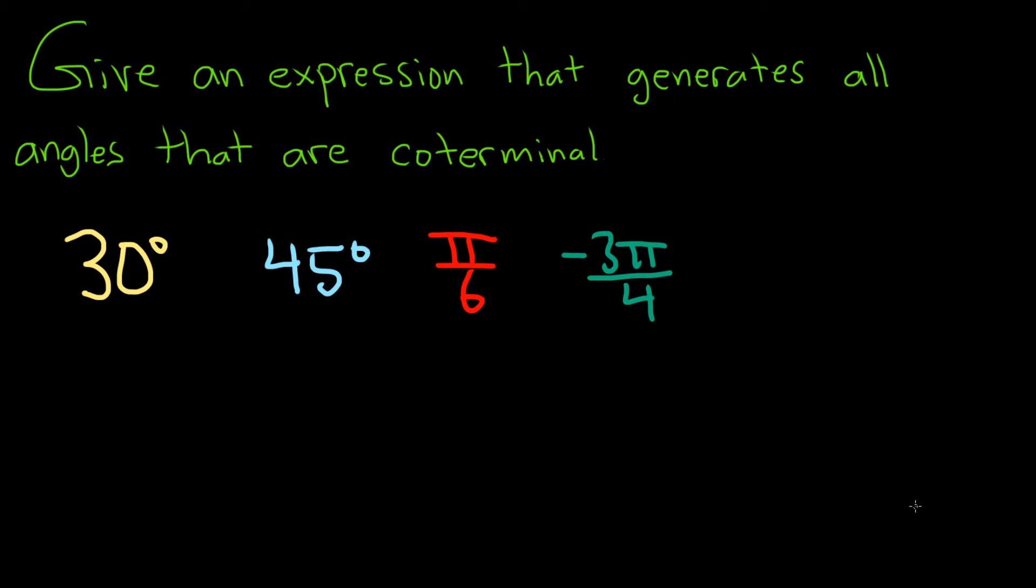Two angles are coterminal if their degrees differ by a multiple of 360. Intuitively, what that means is if we have some angle over here, to get back to this point you can add or subtract 360 as many times as you want and you still end up at the same place.